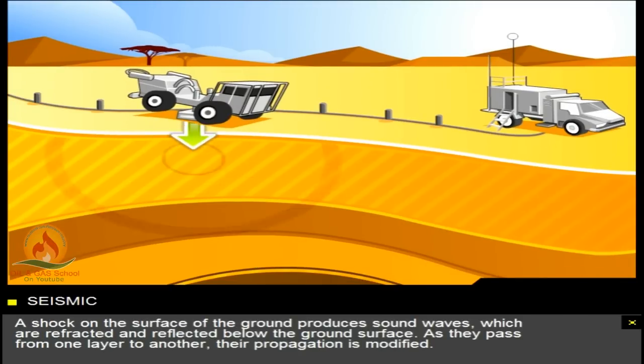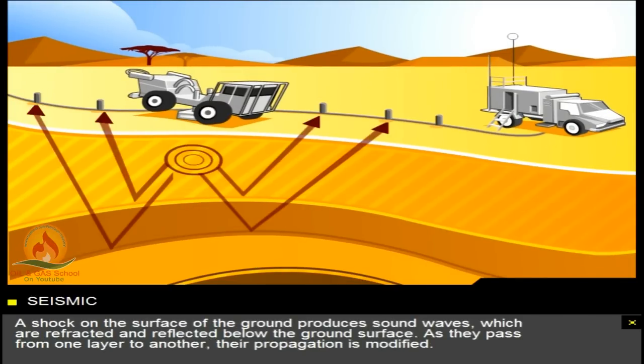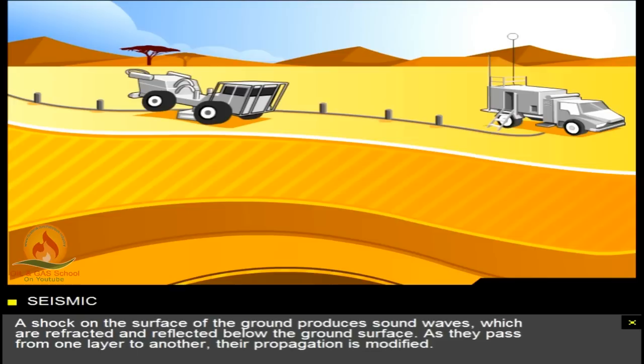A shock on the surface of the ground produces sound waves, which are refracted and reflected below the ground surface. As they pass from one layer to another, their propagation is modified.